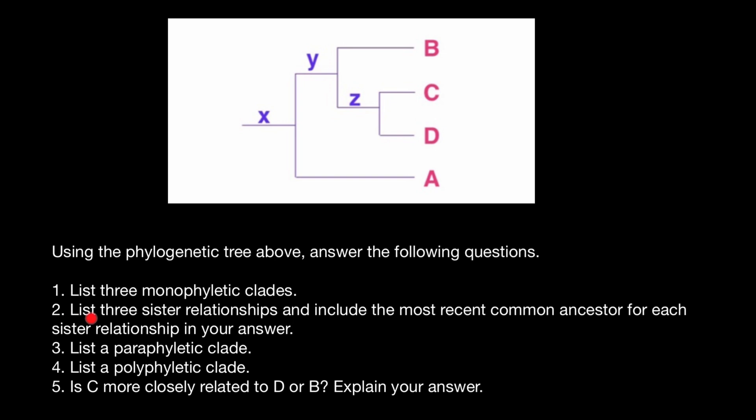Next question: list three sister relationships and include the most recent common ancestor for each sister relationship in your answer. And take a look. Here we have species C and D, or taxa C and D, and the recent common ancestor is going to be here.